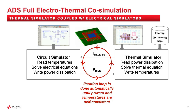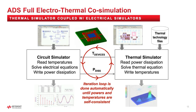You get two benefits from performing full electrothermal co-simulation. First, you get more accurate circuit simulations because you'll have more accurate device temperatures for all devices in the schematic — assuming your device models are accurate versus temperature. Second, you get access to the full 3D thermal viewer embedded in ADS, where you can probe and post-process the temperature and view it in full 3D.